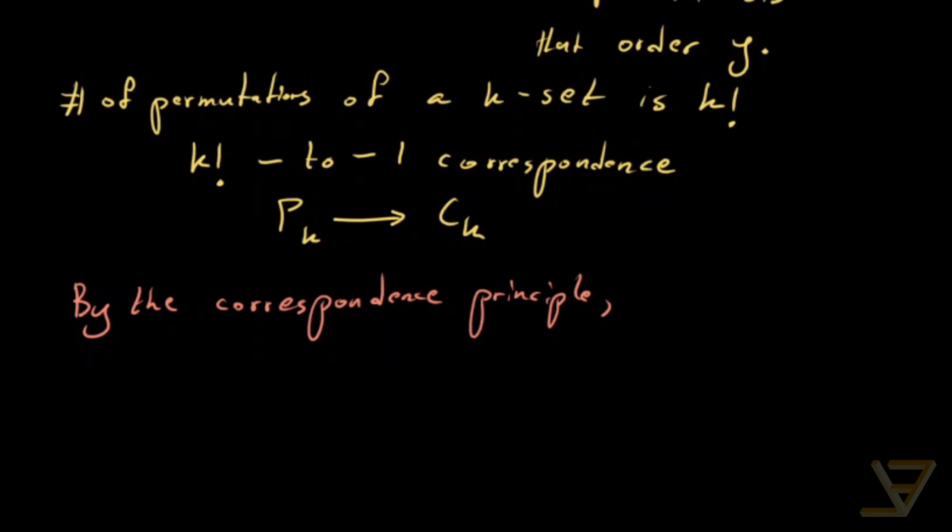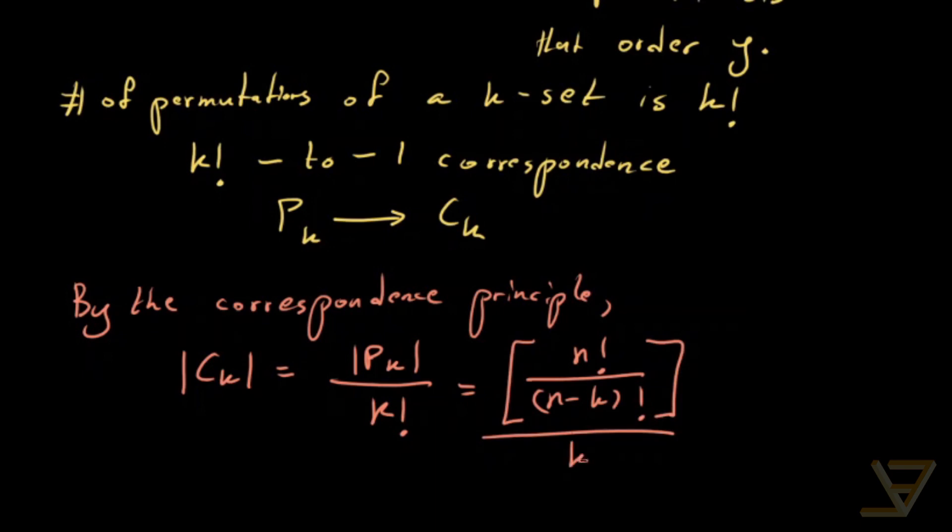we find that the cardinality of C_k is equal to the cardinality of P_k divided by k factorial. And that's just equal to n factorial over n minus k factorial times k factorial. That's the cardinality of P_k divided by k factorial.